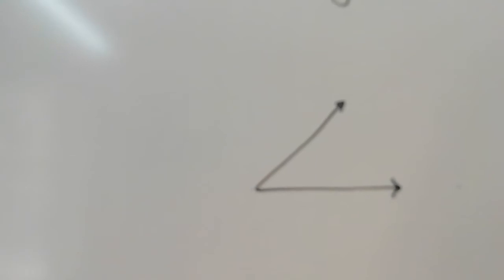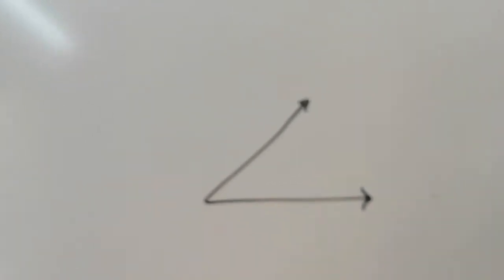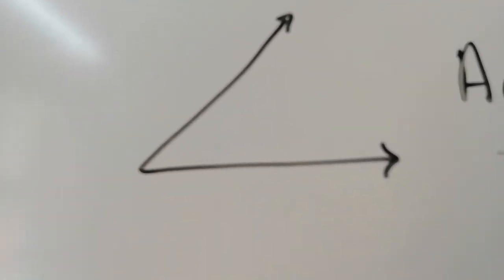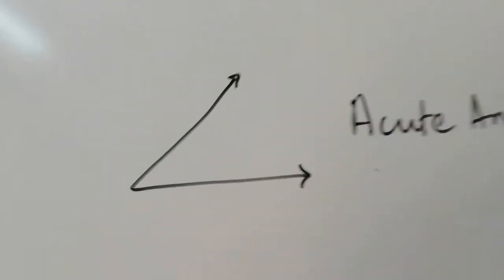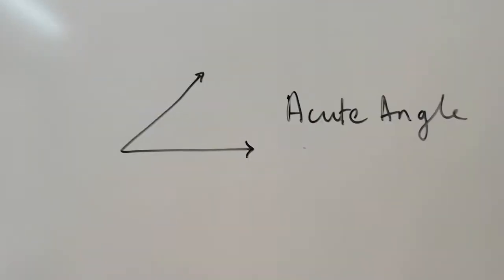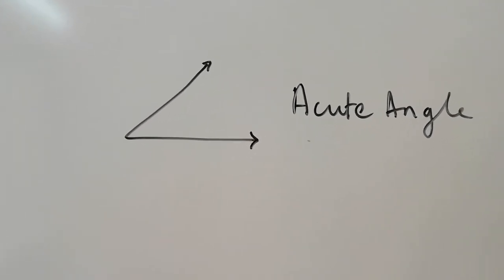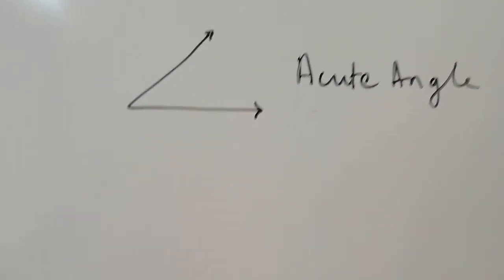Now let me describe the types of angles. What is this angle called? It is an acute angle. An acute angle means an angle which is less than 90 degrees.